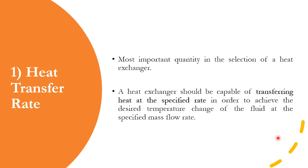For example, you want the hot stream entering the heat exchanger at 70°C to leave at 50°C, and the cold stream entering at 20°C to leave at 25°C. The heat transfer rate accordingly should be met, so the heat exchanger selected should be able to fulfill that demand of heat transfer rate.